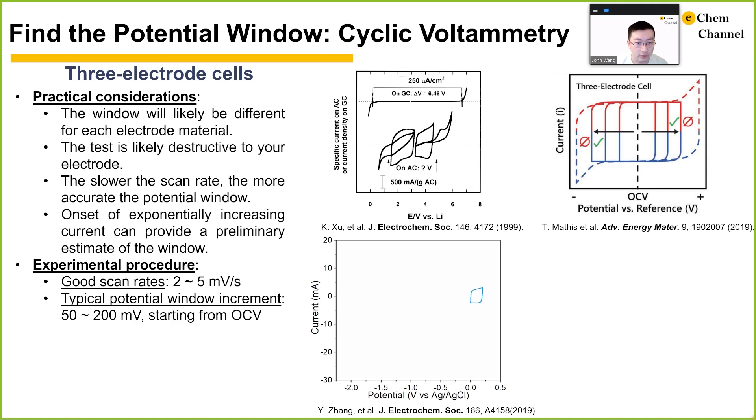In a typical potential window exploration experiment, we can pick a scan rate of 2 to 5 mV per second and start the exploration around the open-circuit potential or OCV. It is recommended to make two electrochemical cells, one for the positive direction and the other for the negative direction. Take 50 to 200 mV for each potential increment. The increment determines the resolution of your potential window. A potential window exploration experiment towards the negative direction is shown here.